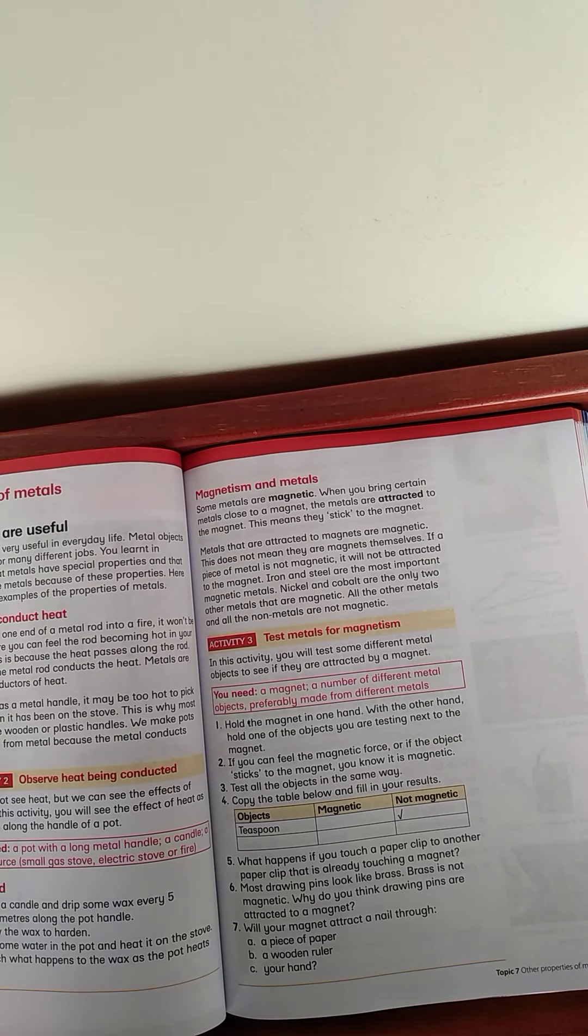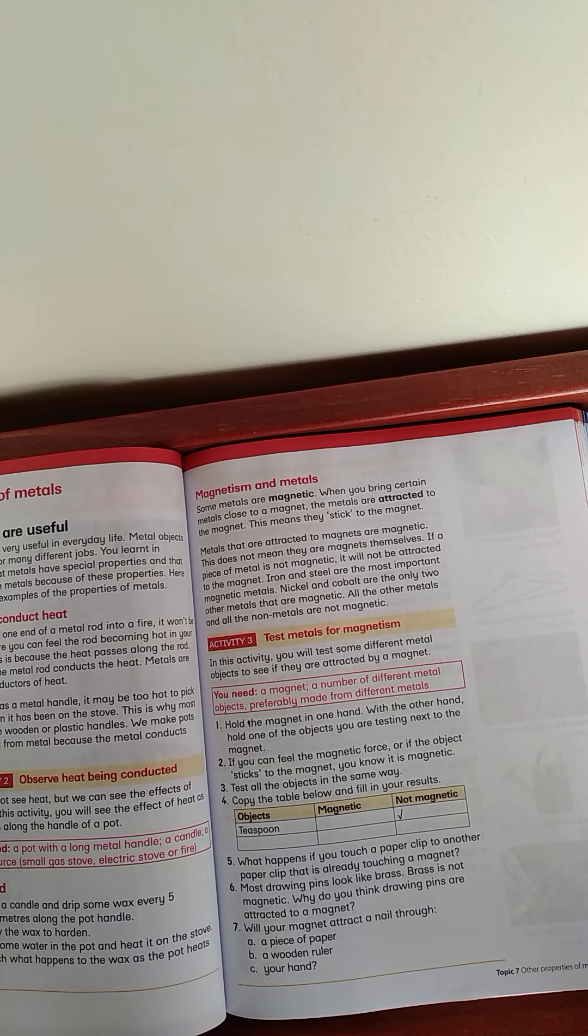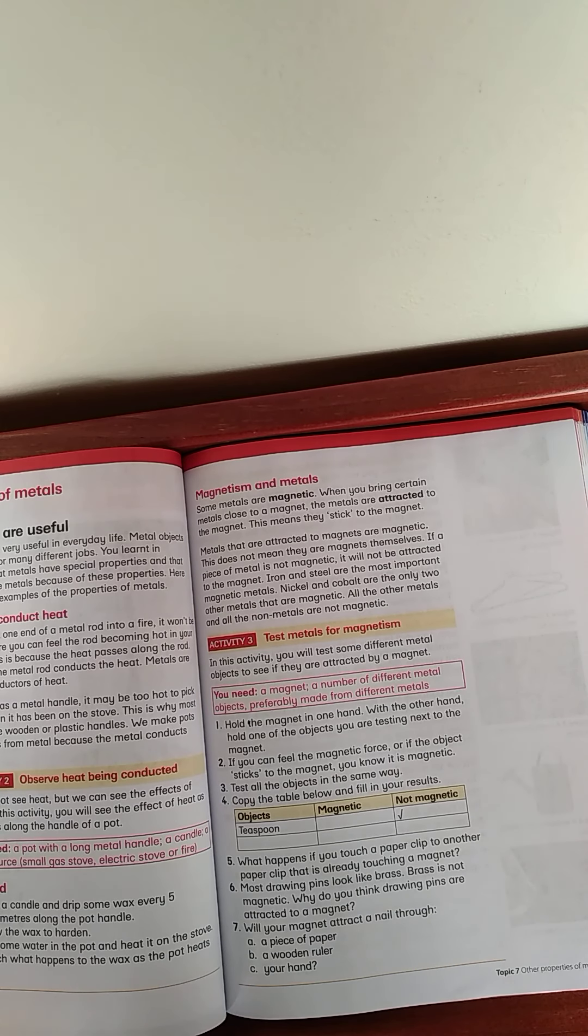So, test metals for magnetism. Activity 3 is also a sort of like an experiment activity. I want you to please try and do it if you can. If you can't, it's still fine. Just try and write as much as you can from what I say. In this activity, you will test some different metal objects to see if they are attracted by a magnet. If you can find a magnet, perhaps a fridge magnet or something like that. You will need a magnet, a number of metal objects like paper clips and things like that. It will be made from different metals. So, if you only have one metal, it's still fine. If you can use like a fridge magnet and a paper clip.